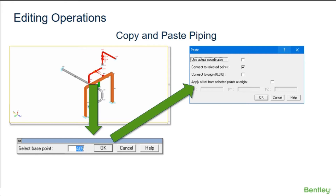There are some rules that apply when pasting the contents of the clipboard. If no range has been selected and the connect to selected points is enabled, the clipboard contents will be pasted and connected to the current point. If no range has been selected and an offset is specified, the clipboard contents will be pasted at the specified offset from the origin.